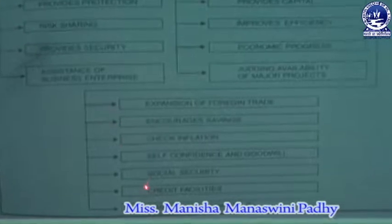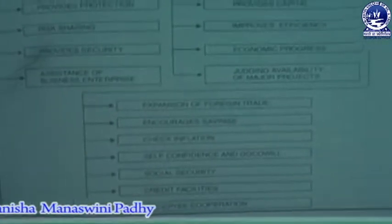The secondary functions include: prevention of loss, provides capital, improves efficiency, economic progress, and judging the viability of major projects. The other functions — those not included under primary and secondary — include: expansion of foreign trade, encourages savings, check inflation, self-confidence and goodwill, social security, credit facilities, and employee cooperation.